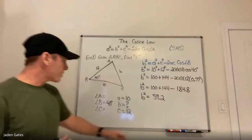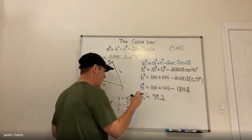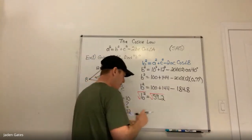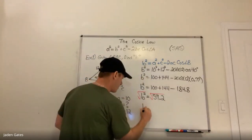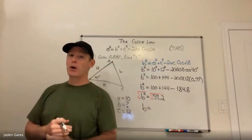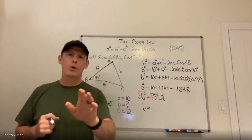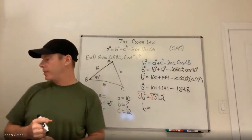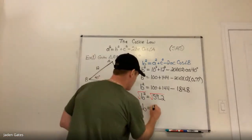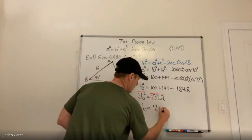My last step — and notice everything's getting simpler, which is always key to math — I'm going to square root both sides. I square root 59.2. Again, I would get two answers if you remember from our quadratic unit, but because we're dealing with lengths, I'm only worried about the positive answer in this unit. I get positive 7.69.